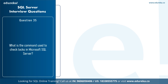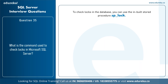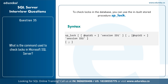The next question is: what is the command used to check locks in Microsoft SQL Server? To check locks in a database, use the built-in stored procedure SP_LOCK. The syntax is 'SP_LOCK [SPID = session_id1 [, session_id2]]'. For example, to list all locks currently held in an instance of the database engine: 'USE sample_database; GO; EXECUTE SP_LOCK; GO'.